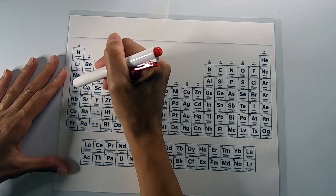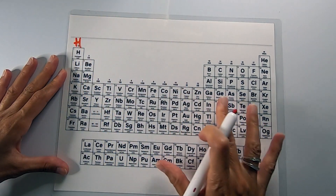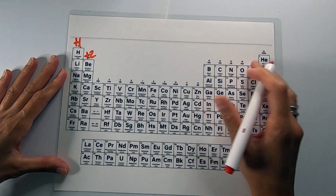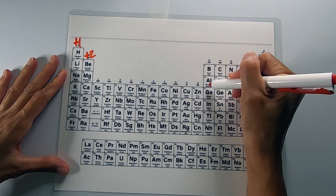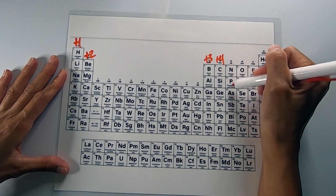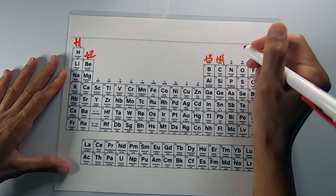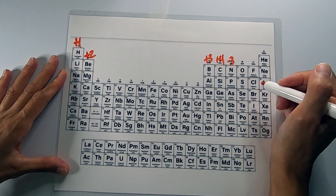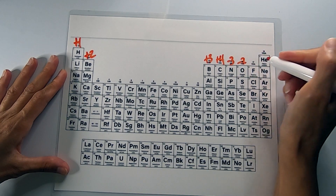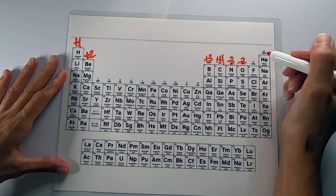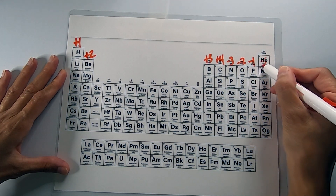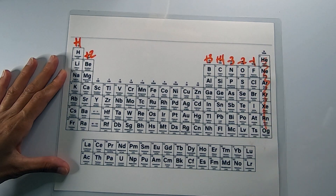Group 1 atoms have a positive 1 charge, group 2 atoms have a positive 2 charge, group 3 positive 3, group 4 positive 4, group 5 atoms have a negative 3 oxidation number, group 6 negative 2, and group 7 have a negative 1 oxidation number. We won't really be dealing with the noble gases right now.